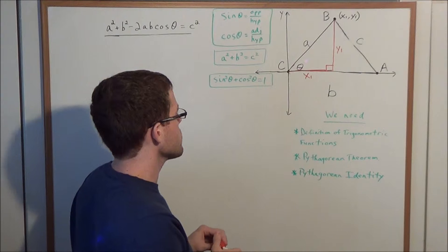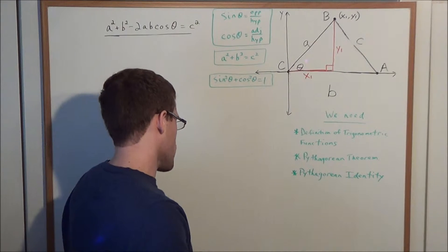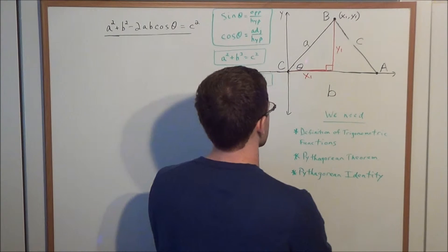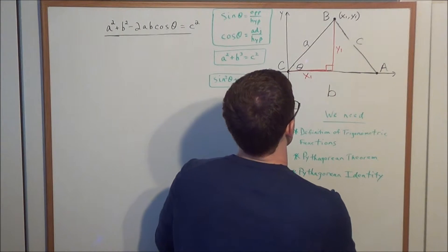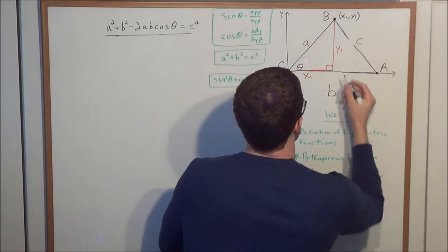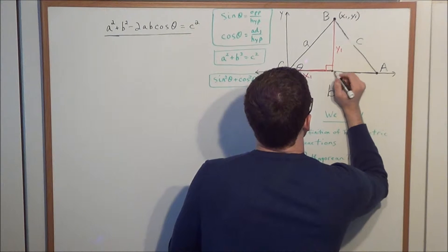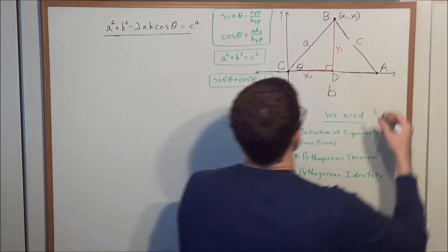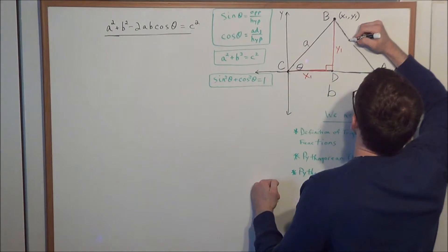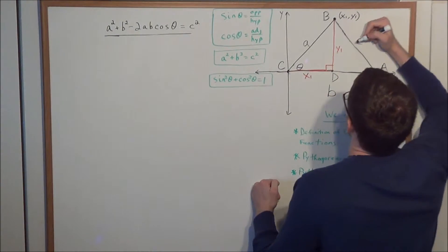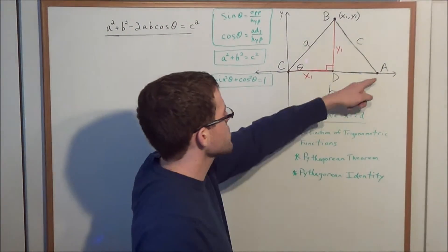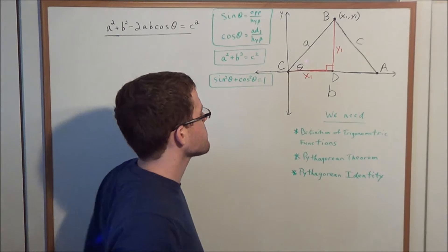Now what we need to do is label this new vertex here — we'll call it vertex D. That way, we can name our two right triangles. We have right triangle BCD, and we have right triangle ABD.